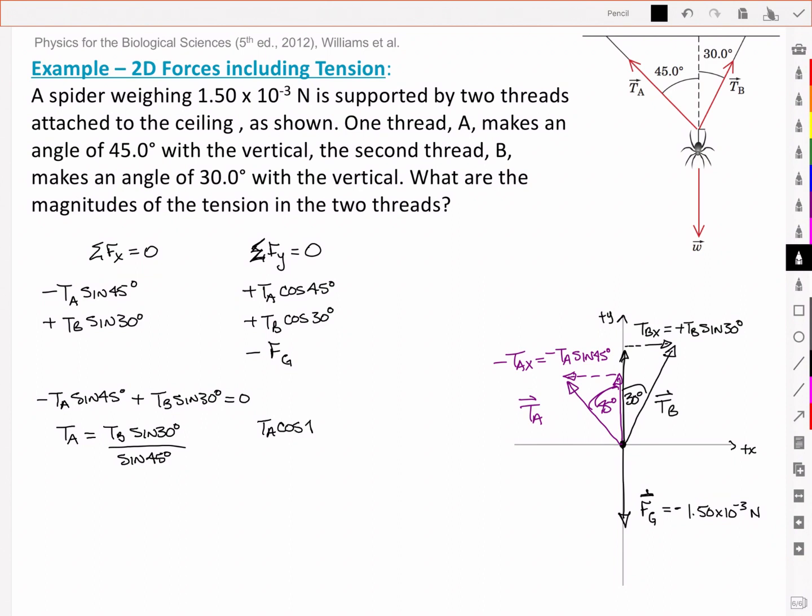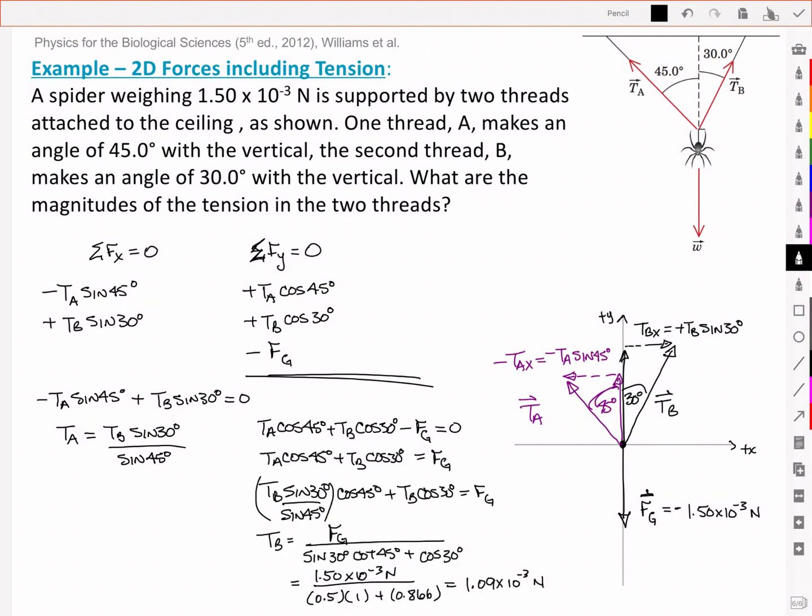Plus Tb cos of 30 degrees minus Fg all equal to zero. So that comes from this side and I'm going to substitute from the left. And so substituting everything in I've got Tb is equal to 1.09 times 10 to the negative 3 newtons.